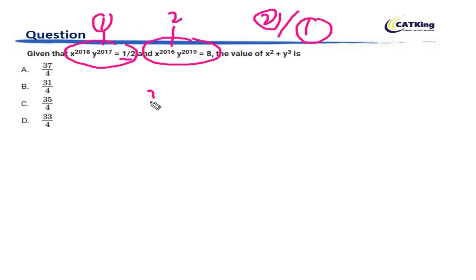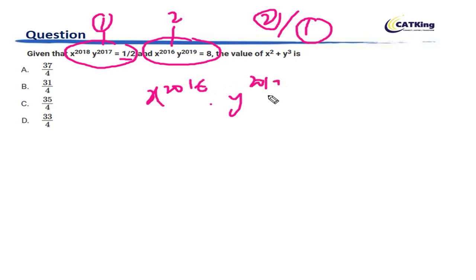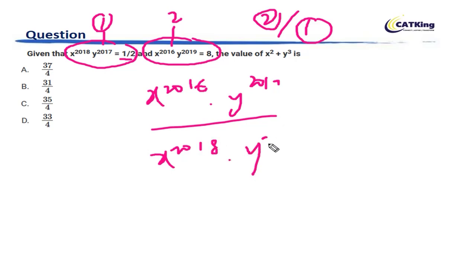So in that case, X to the power 2016 into Y to the power 2019, divided by X to the power 2018 into Y to the power 2017, becomes equal to 16.